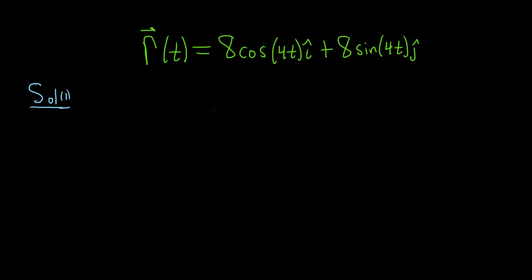Solution one requires that you look at this and recognize that the graph of this vector-valued function is actually a circle of radius 8. So r is equal to 8. And therefore, the curvature k is given by the formula 1 over r. So in this case, it would be 1 over 8.